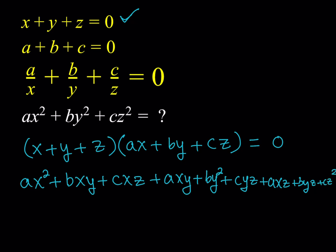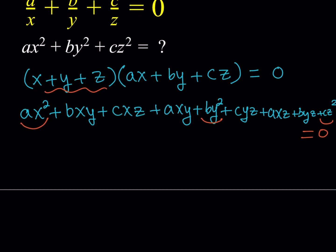Notice that here we have something cool: ax squared plus by squared plus cz squared. And obviously this is equal to zero because x plus y plus z is equal to zero. Now let's rearrange these terms so that we write ax squared plus by squared plus cz squared first, and then everything else next. When writing these remaining terms, it makes sense to put like terms together so that we can use factoring.